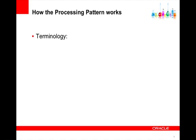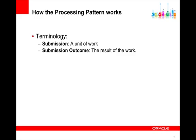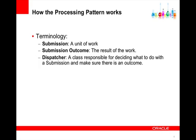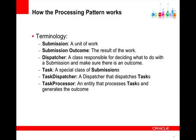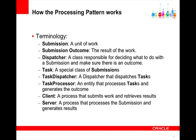I'm going to cover how the processing pattern works, and first we'll start with some terminology. A submission is a unit of work. A submission outcome is the result of the work. A dispatcher is a class responsible for deciding what to do with the submission, and it makes sure that there is an outcome for each submission. A task is a special class of submission. A task dispatcher is a dispatcher that dispatches tasks. The task processor is an entity that takes care of tasks, processes them, and generates the outcome. A client is a process that submits work and retrieves results, and a server is a process that processes the submission and generates results.